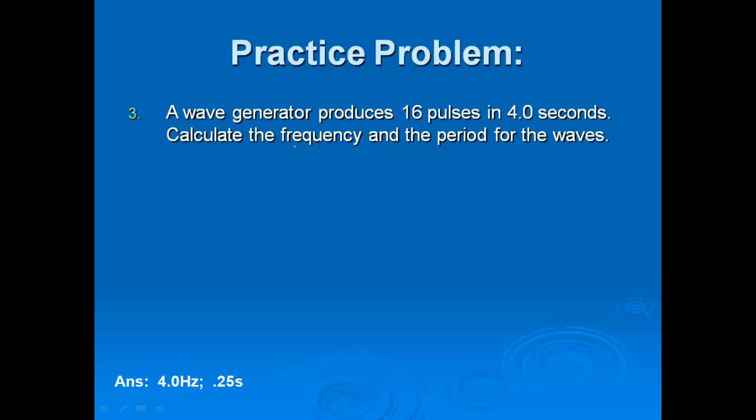This one is giving me more information: 16 pulses per second. That sounds like a good way to get my frequency. My frequency, 16 pulses in 4 seconds, which is going to give me 4 hertz. They want the period. I know that the period is 1 over the frequency. So 1 divided by 4 is going to be 0.25 seconds.